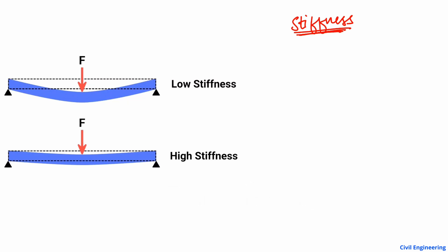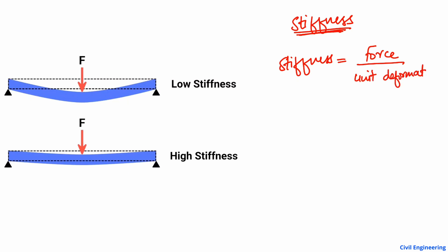First of all, to define the stiffness of a material or any kind of object: stiffness can be defined as the force required to produce a unit deformation in a body. It is known as the stiffness of a material or stiffness of a body. So the force required to produce a unit deformation — this is very important to note.